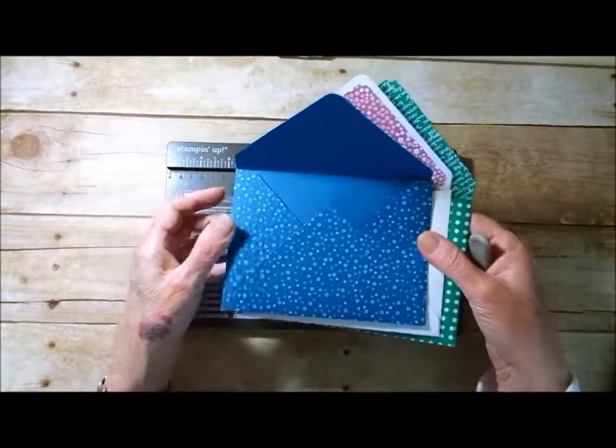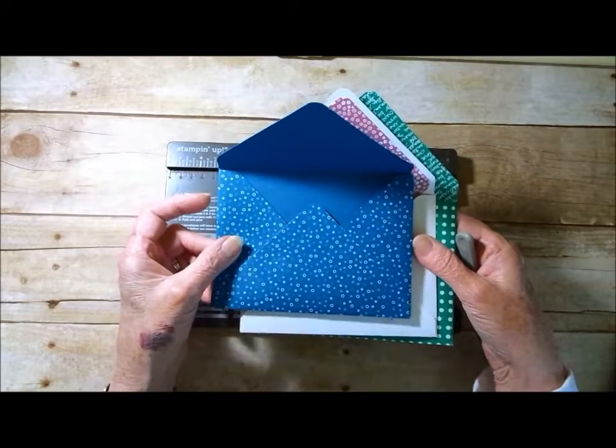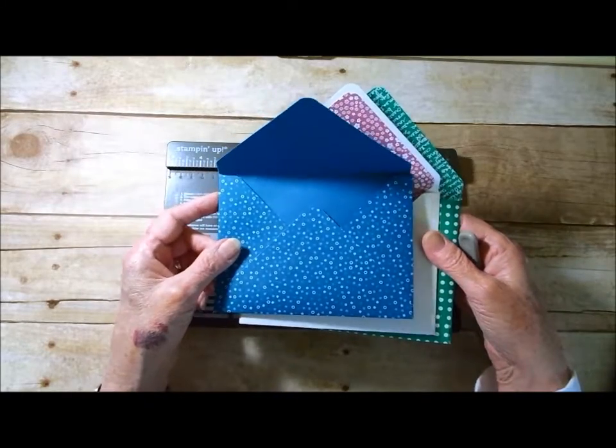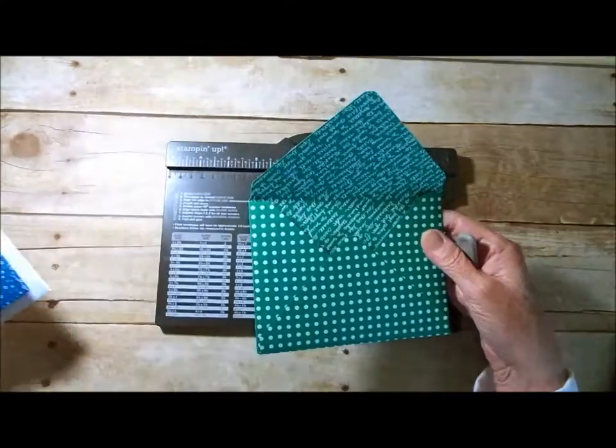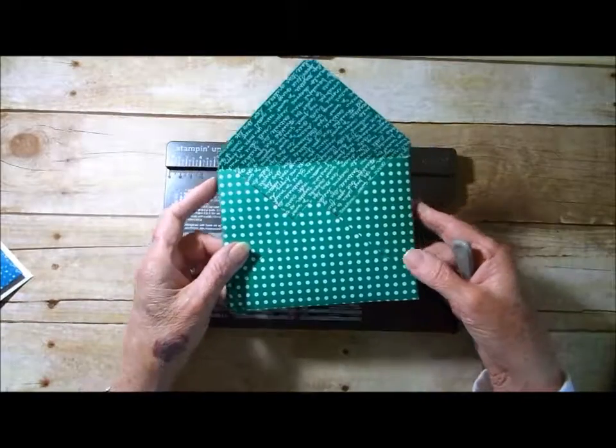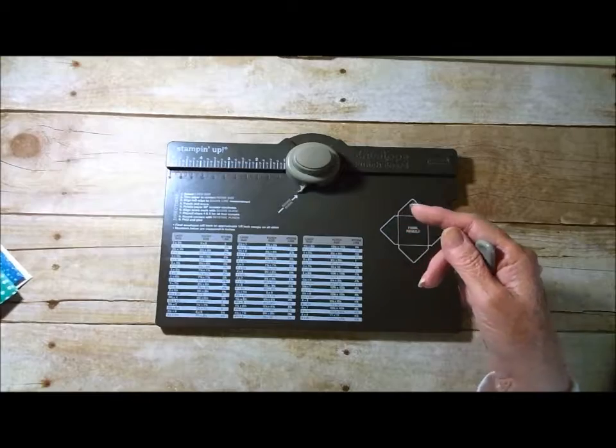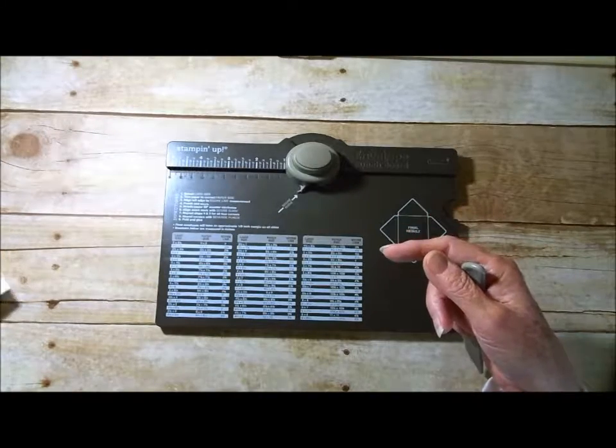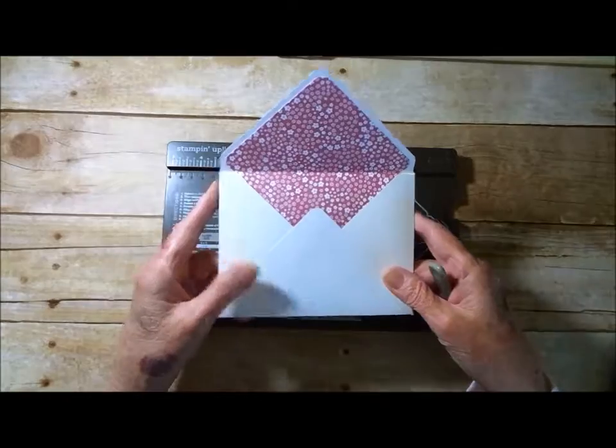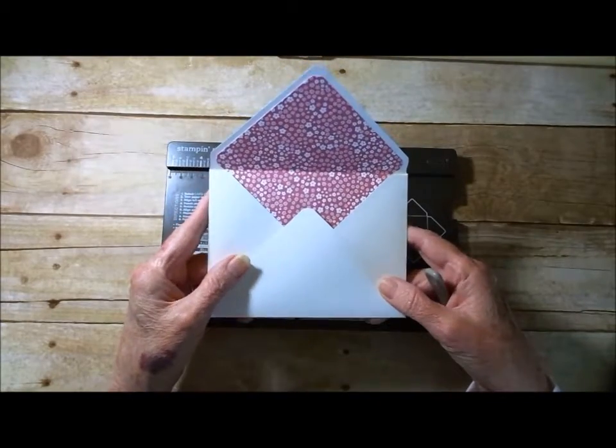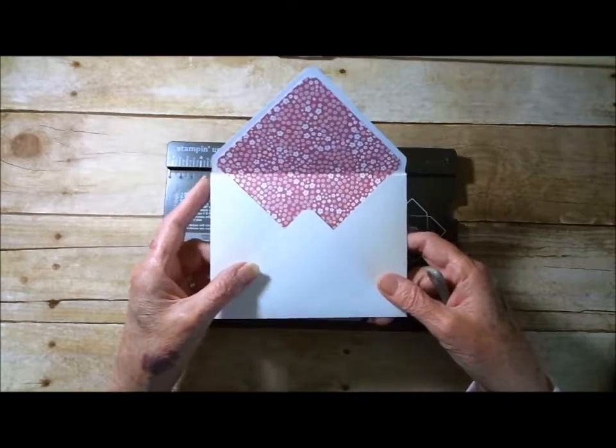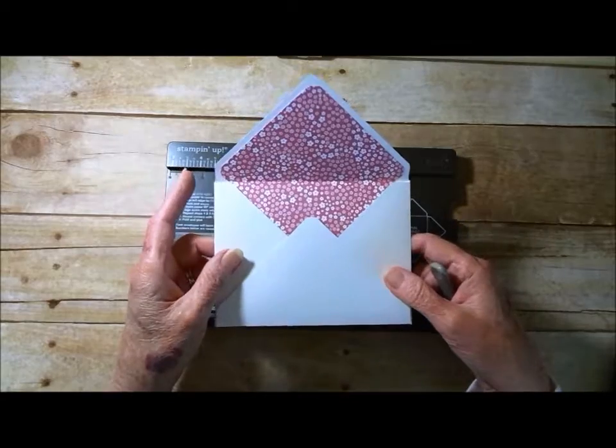You can make your envelopes using the Stampin' Up! envelope paper which is found in the annual catalog or any of the 12x12 designer series paper. Today we're going to be making one out of cardstock using the Whisper White. This does make a little bit heavier envelope than the other two but it works just as well.